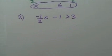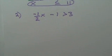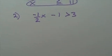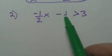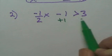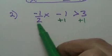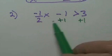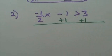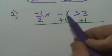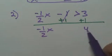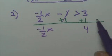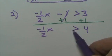Second example. My first step is to get rid of the minus one, so I'll add one. These are just two-step problems. That gives us negative one-half x, and three and one makes four. Do I need to switch the arrow? All I did was add one, so no, I don't have to switch the arrow.